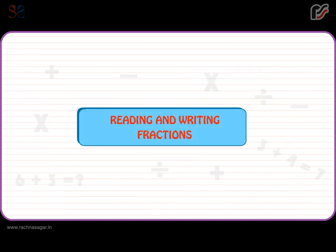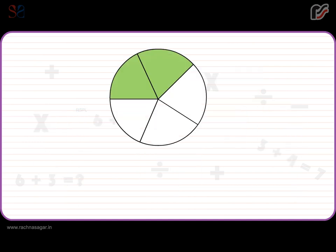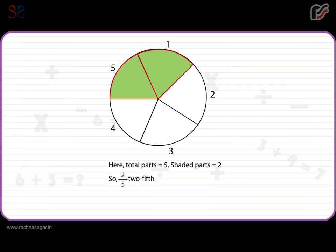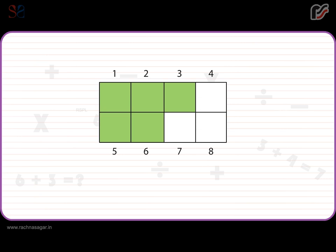Reading and Writing Fractions. Look at the given circle. Here, total parts is equal to five and shaded parts is equal to two. So, two-fifth part is shaded. Now, look at the given rectangle. Here, total parts is equal to eight and shaded parts is equal to five. So, five-eighth part is shaded.